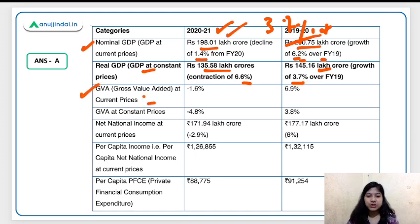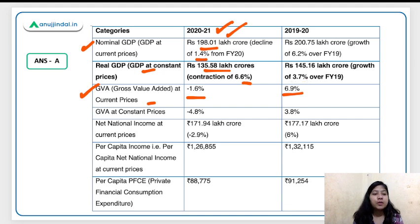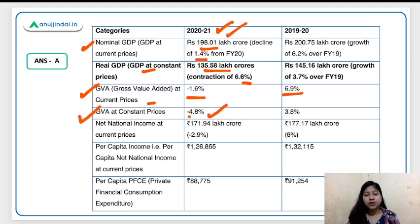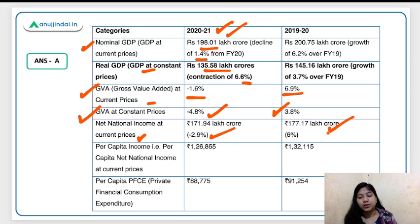Gross value added at current prices declined by 1.6 percent in FY21, with a growth rate of 6.9 percent in FY20. GVA at constant prices fell to minus 4.8 percent in FY21, compared to growth of 3.8 percent in FY20. Net national income at current prices was 171.94 lakh crores in FY21 — a contraction of 2.9 percent — versus 177.17 lakh crores in FY20.